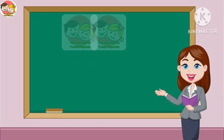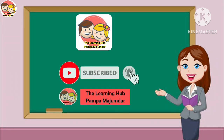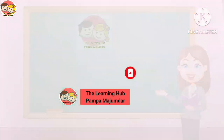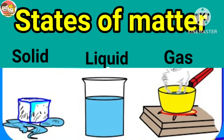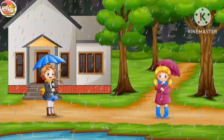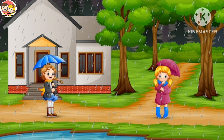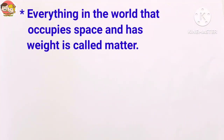Hello everyone, welcome back to another informative and interesting session. Today we are going to focus on matter — solid, liquid and gas. When you look around, we see various things, some of which happen naturally in the environment while others are created by humans. These things come in different shapes, sizes and colors, but they all have something in common: they have weight and they occupy space. So everything in the world that occupies space and has weight is called matter.